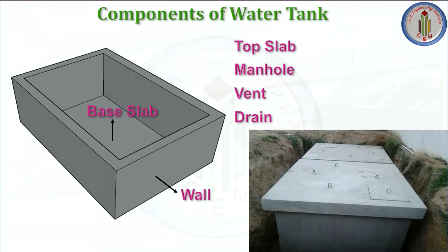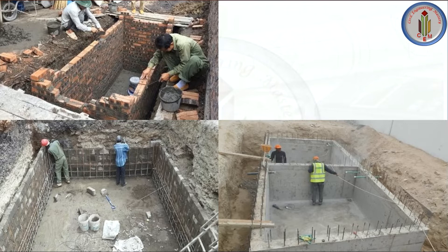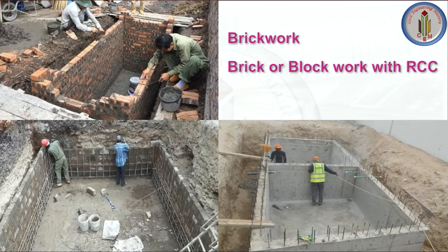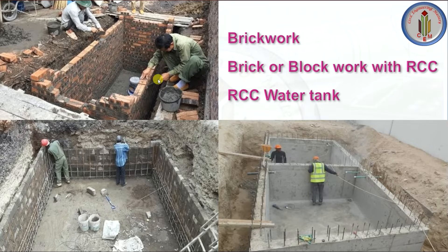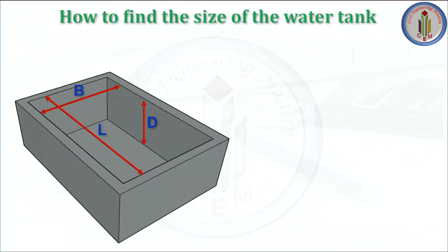These are the major components of an underground water tank. It can be constructed using brick work or block work with RCC, or only with RCC. When you use only brick work, you have to be very careful — use a double layer of brick along with proper waterproofing. Without proper waterproofing, you may get leakages. It is always recommended to go with brick or block work with RCC, or an RCC water tank.